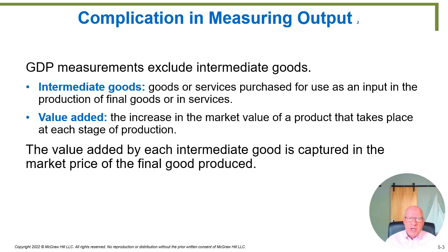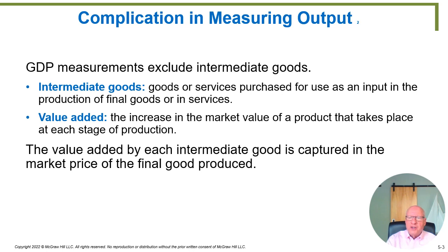There are some complications in measuring GDP. The first one is we need to make sure we're excluding what are called intermediate goods. An intermediate good is a good or service purchased for use as an input in the production of final goods or final services. For example, let's assume one company produces water pumps for engines and sells those water pumps to an engine maker; the engine maker sells the engine to a truck manufacturer; the truck manufacturer sells it to a final customer. If the water pump costs $300 to produce, the engine maker sells the engine for $7,000, and the final truck is sold for $50,000 — is it correct to add all those numbers together and say we produced $57,300 worth of stuff? It turns out the answer is no.